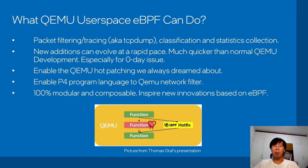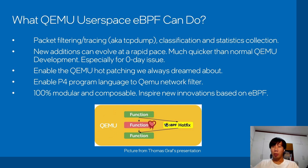What can QEMU userspace eBPF do? From a technical principle point of view: packet filtering, tracing, classification, and static collection — this is what original BPF did, and we can do it better. New additions can evolve at a rapid pace, much quicker than normal QEMU development, especially for zero-day issues. This enables QEMU hot patching that we have always dreamed about, though it needs developers to add many hook points in the future. It also enables P4 program language to QEMU network filters, and eBPF is already 100% modular and composable, inspiring new innovation.